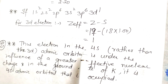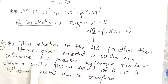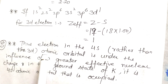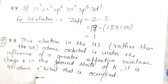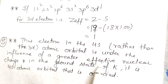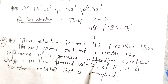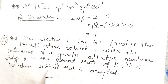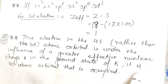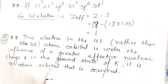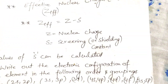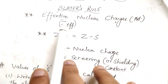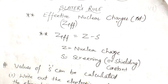Thus, the 4S electron experiences a greater Z_effective (2.20) compared to the 3D electron (1.00). This greater effective nuclear charge on the 4S orbital explains why, in the ground state of potassium, the 4S atomic orbital is occupied rather than 3D. That is how we calculate effective nuclear charges.